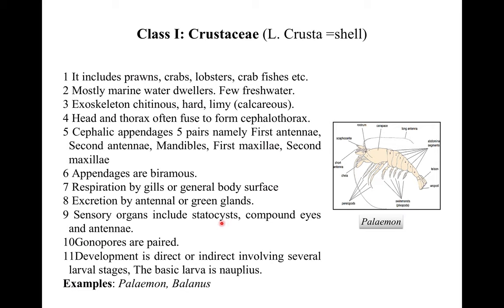Gonads are paired. Development is direct or indirect, involving several larval stages, with the basic larva being a nauplius. Examples are Palaemon and Balanus. In the picture of Palaemon you can see the carapace, long antennae, short antennae, walking legs, pleopods, telson, and abdominal segments.